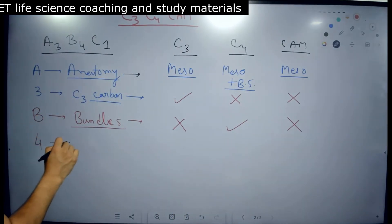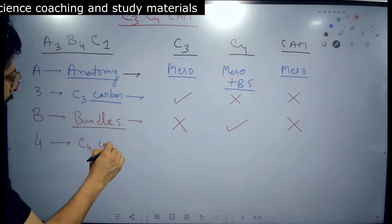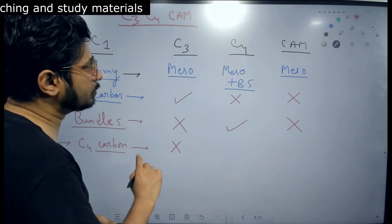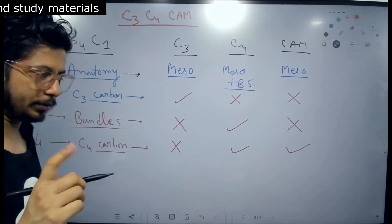And now is the 4. The carbon intermediate, 4 carbon. 4 carbon compound intermediate produced as a result of C3 pathway no. Produced as a result of C4 pathway yes. As a result of CAM pathway yes, produced.